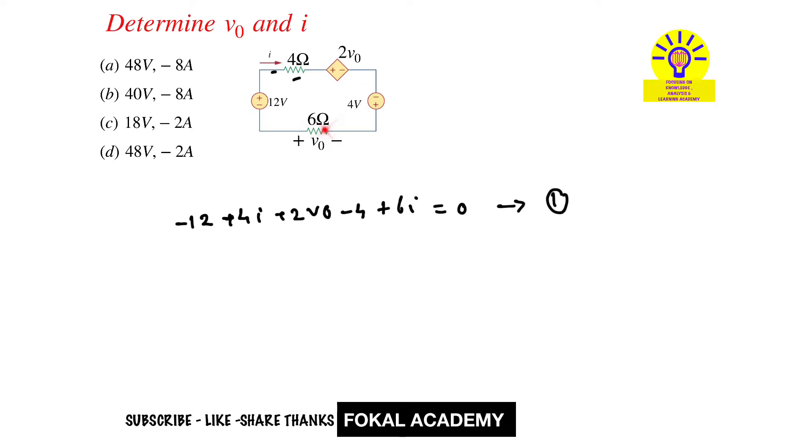Now across six ohm resistor apply Ohm's law, so then we get v0 equal to minus 6i. Let's consider this is equation two.